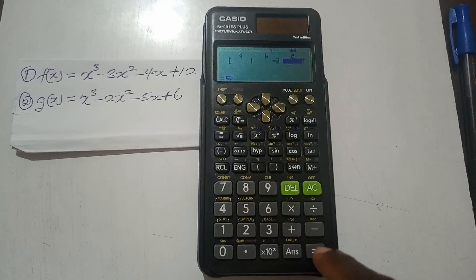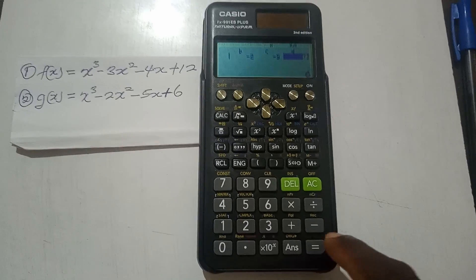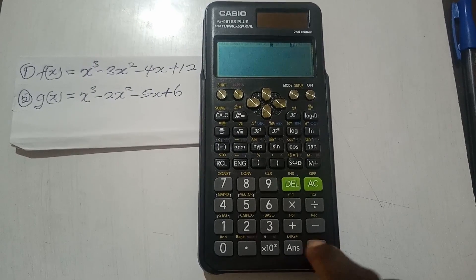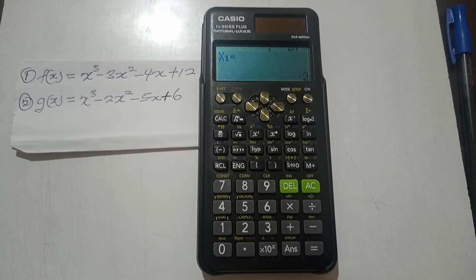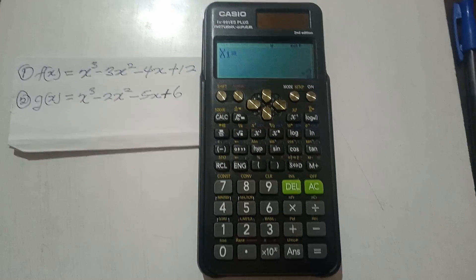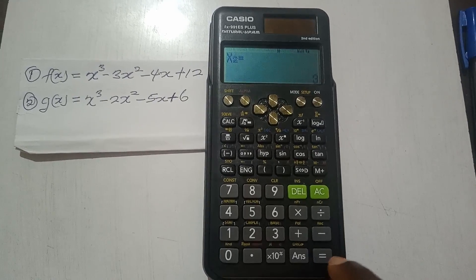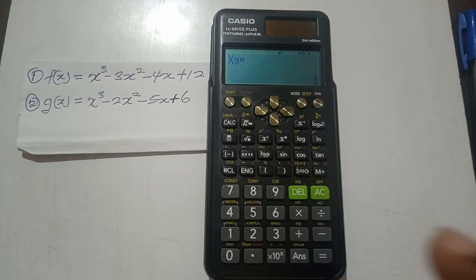Negative 5 for c, and then 6 for d. And after that you press equal to again, it's taking time because it's calculating. Then our x1 is negative 2, which is the first value. x2 is 3, and x3 is 1.